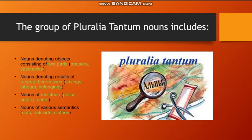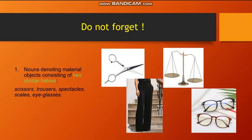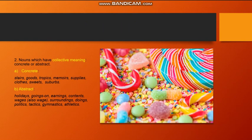The group of pluralia tantum nouns includes nouns denoting objects consisting of two parts, nouns denoting results of repeated processes, nouns of multitude, and nouns of various semantics. These include nouns denoting material objects consisting of two similar halves, such as scissors, trousers, spectacles, scales, eyeglasses. Nouns with collective meaning, concrete or abstract, for example: stairs, goats, tropics, supplies, sweets, suburbs, holidays, goings-on, earnings, contents, wages, surroundings, doings, and others.